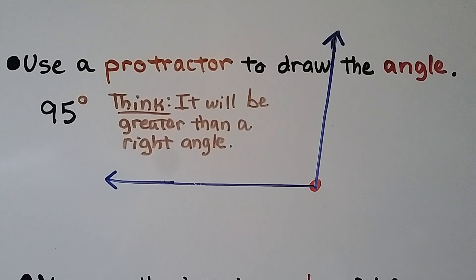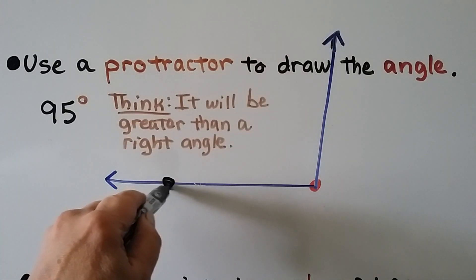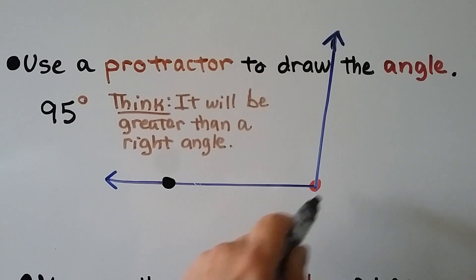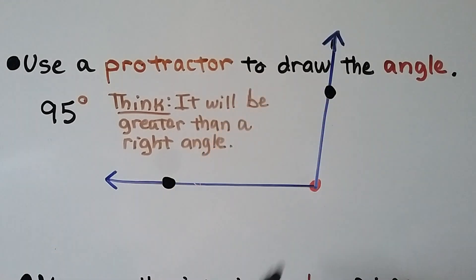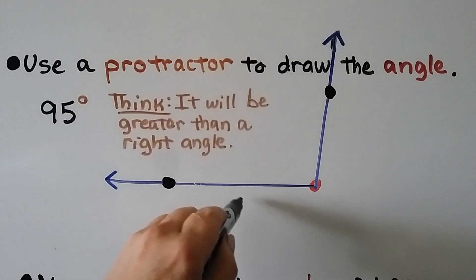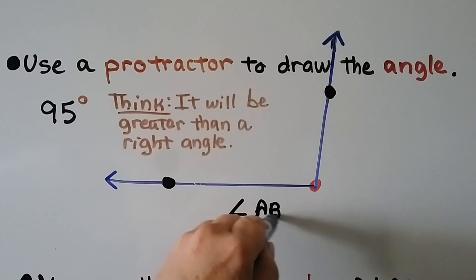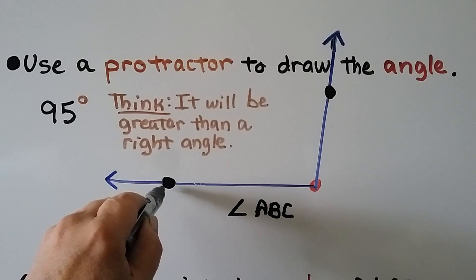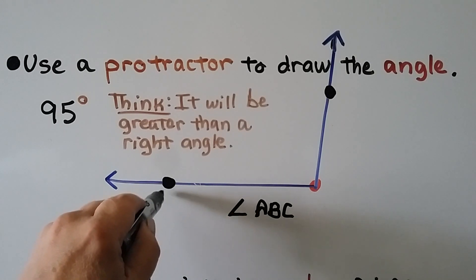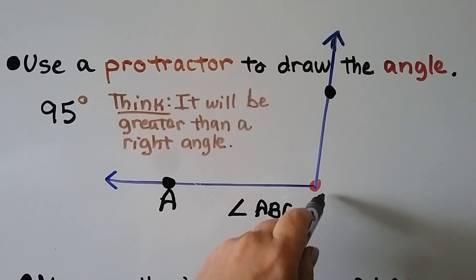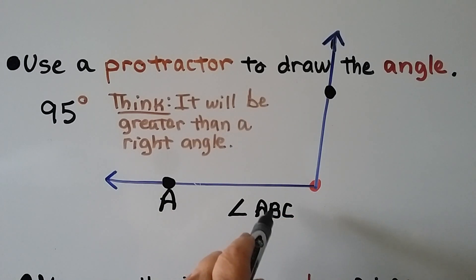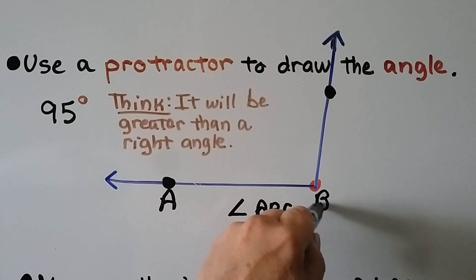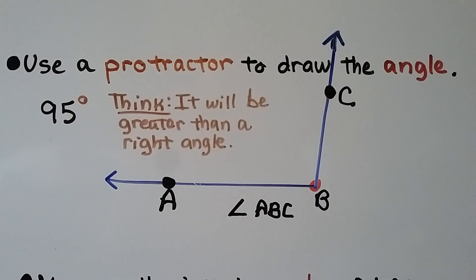We could label this angle with capital letters such as ABC or JKL — anything we want — as long as the vertex is the middle letter. If we called this angle ABC, then B must be at the vertex. Always make sure the middle letter is the vertex letter.